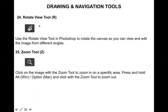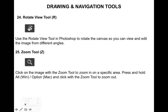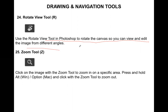The second navigation tool is the Rotate View Tool. The Rotate View Tool in Photoshop lets you rotate the canvas so you can view and edit images from different angles. It allows you to change or rotate the canvas using the Rotate View Tool.